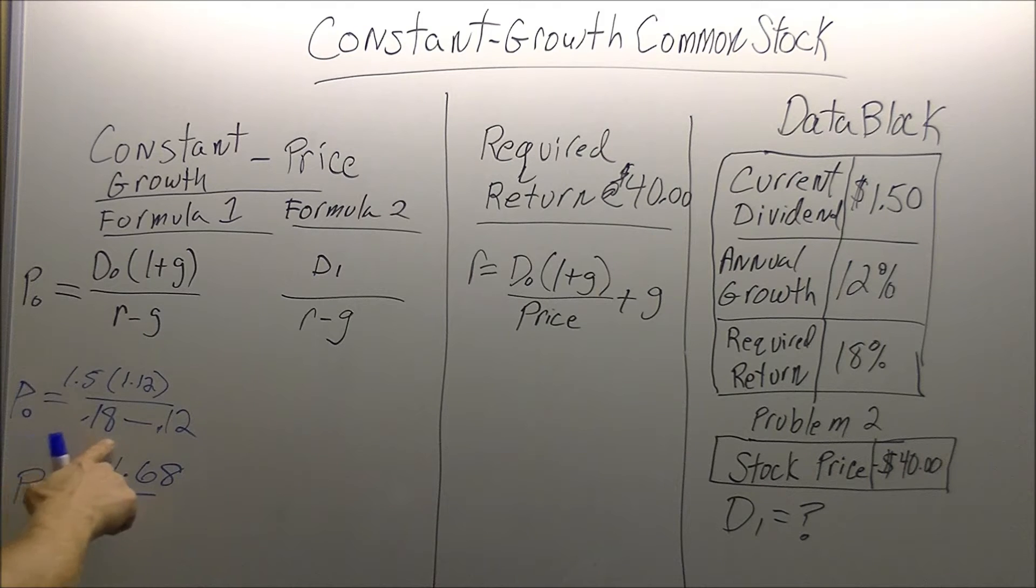For the bottom, the rate minus the growth, 0.18 minus 0.12 gives us 0.06.